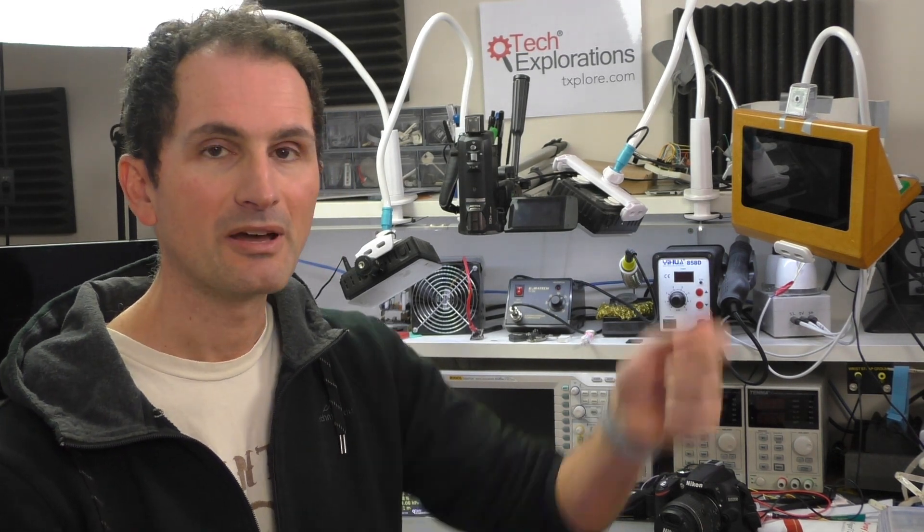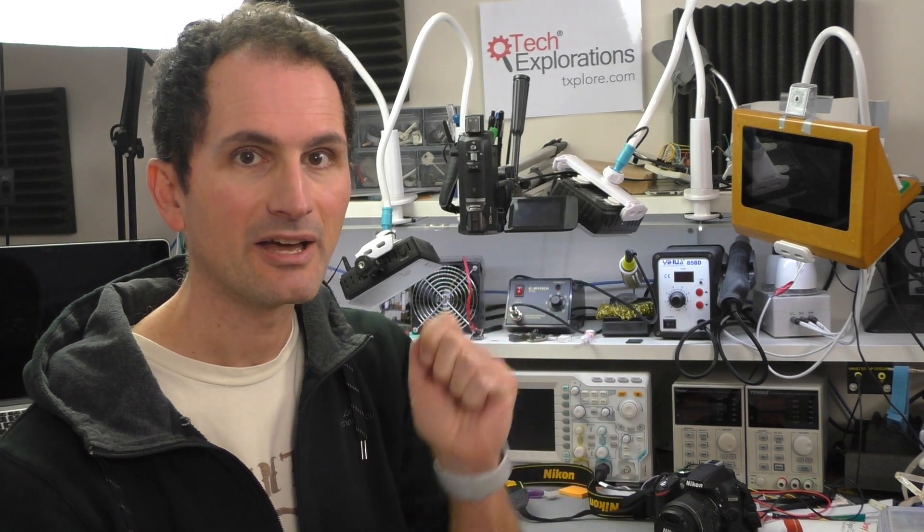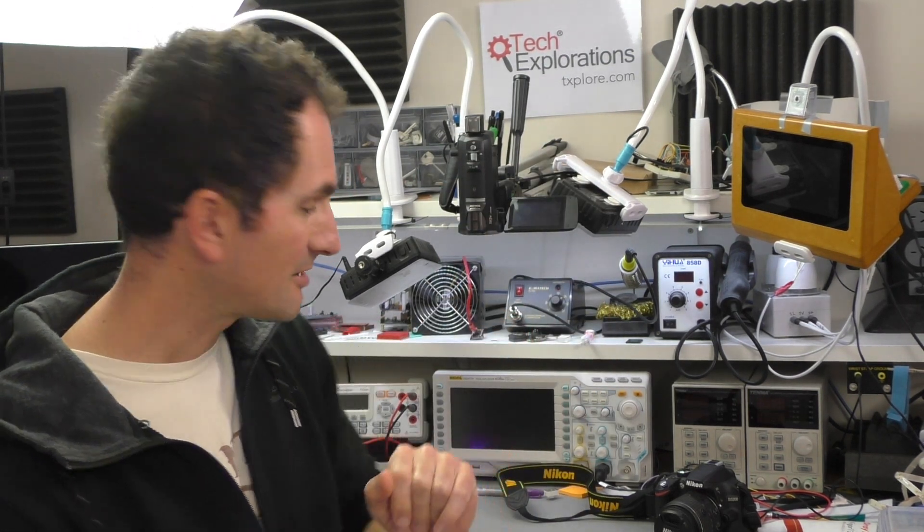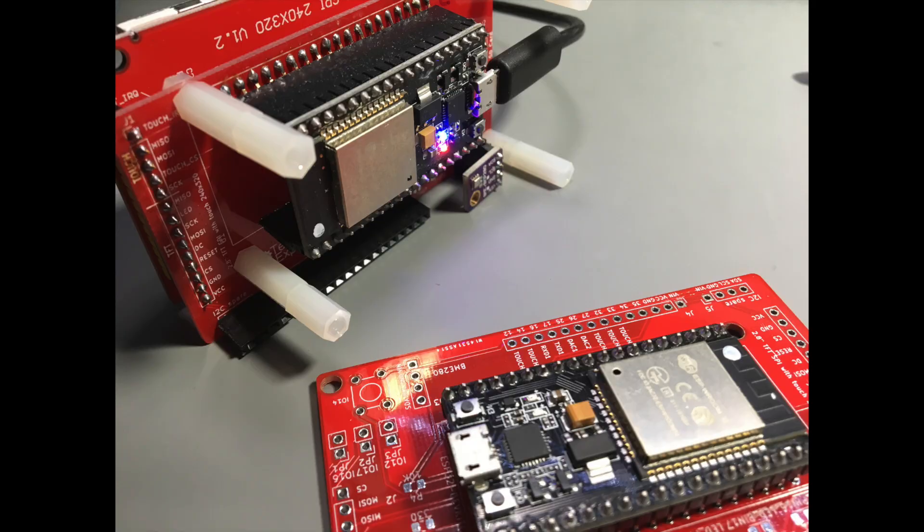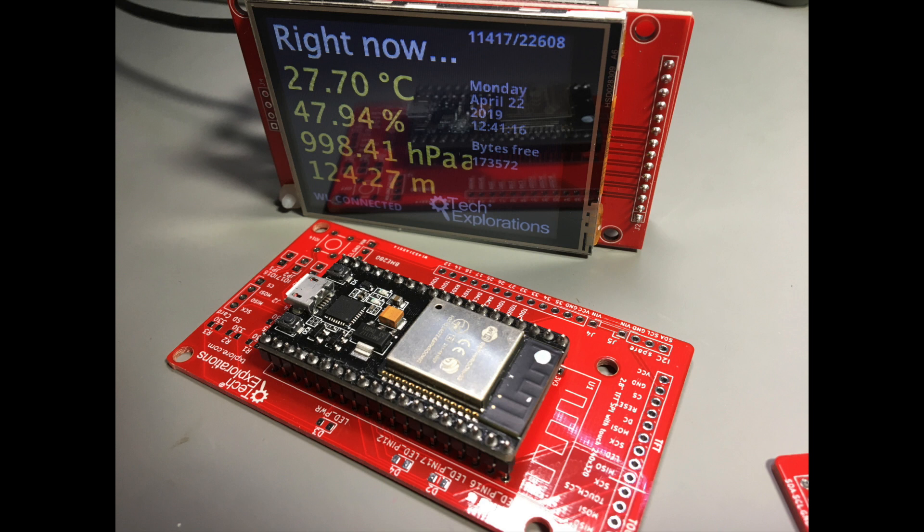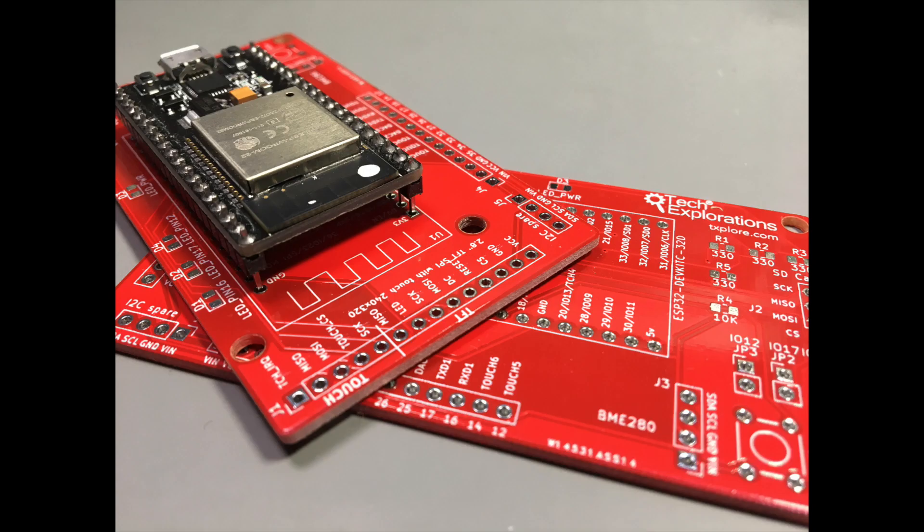But if I want to put my maker hat on instead of the educator hat, then the latest thing that I made is this gadget here, which is an Internet of Things gadget. It contains an ESP32 at the back, a touchscreen at the front, and a few sensors.